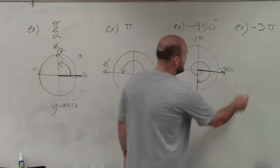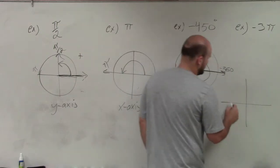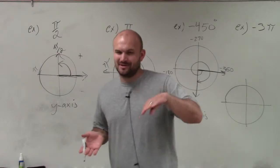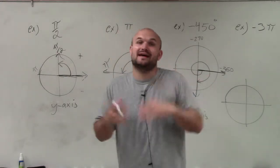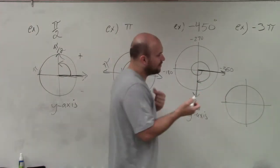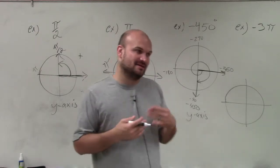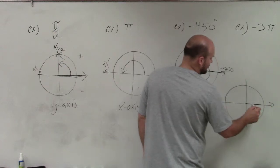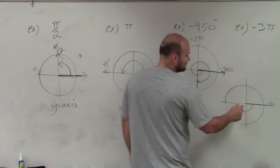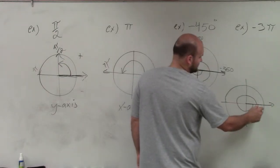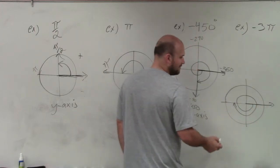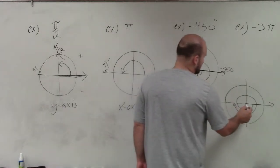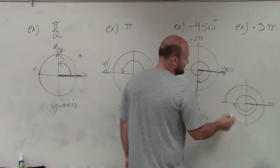Lastly we have negative 3 pi. This one's going to be negative. With pi, it doesn't really matter if I have an angle of pi that's going positive or negative — it's still half of a circle. But it's important when doing negative 3 pi to follow along: here is my initial side. Going all the way here would be negative pi, here would be negative 2 pi, and then here would be negative 3 pi. So my terminal side now ends on the x-axis.